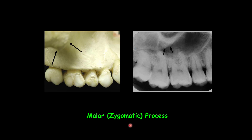The malar process, or zygomatic process, is a projection of the maxillary bone that extends on the buccal surface and articulates with the maxillary process of the zygoma. On practical radiographs, it can be seen in the region of the first and second molars as a U-shaped radiopaque line with its opening upward. You can see the sinus floor and inferior border of the zygomatic process, along with an extension posterior from the zygomatic process called the inferior border of the zygoma, visible as a uniform radiopacity over the apex of the molars.